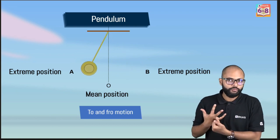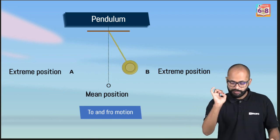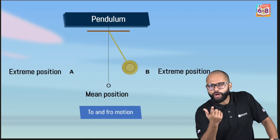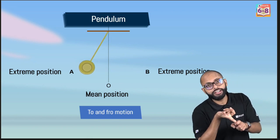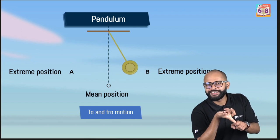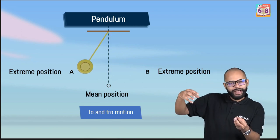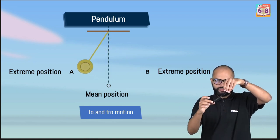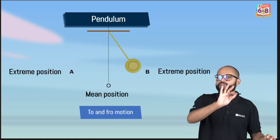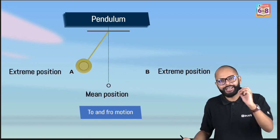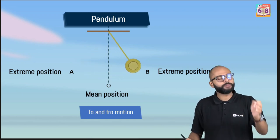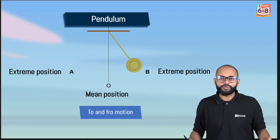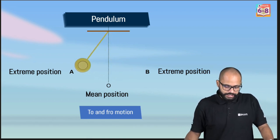The time period of a simple pendulum does not depend on the mass of the bob, nor on the amplitude — whether you release it from a higher or lower position, the time period remains the same. What it does depend on is the length of the pendulum, along with gravity. On Earth, we primarily consider length as the factor on which time period depends.